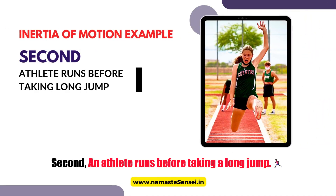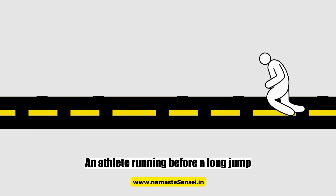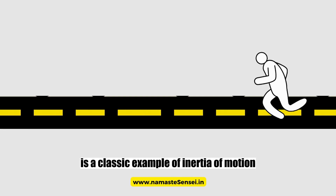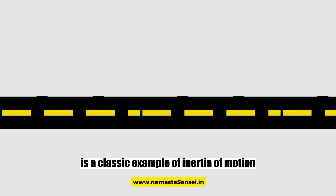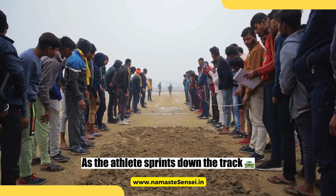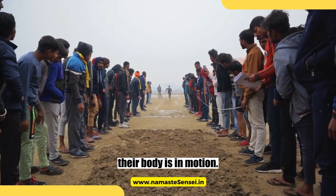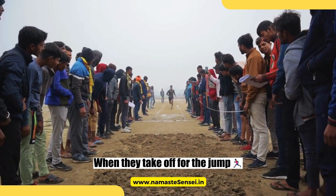Second, an athlete runs before taking a long jump. An athlete running before a long jump is a classic example of inertia of motion. As the athlete sprints down the track, their body is in motion. When they take off for the jump,